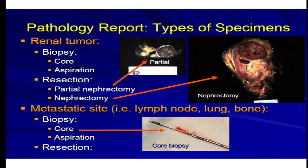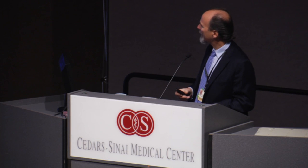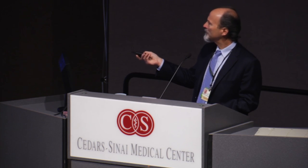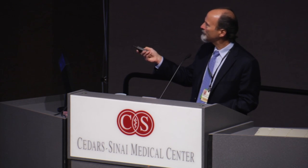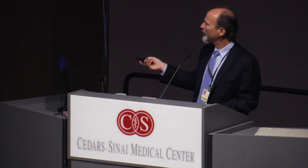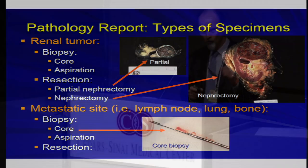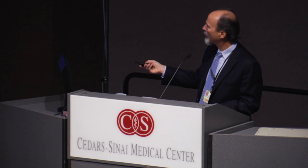This is an example of a nephrectomy with perinephric fat, the sinus fat, drainage area, maybe an adrenal gland up top — an example of a tumor that's been completely resected. Occasionally we will get biopsies from metastatic sites, or unusually from the primary renal tumor, a core biopsy — a much smaller sample of the tumor mass, about a millimeter or two in diameter and maybe up to a centimeter in length.